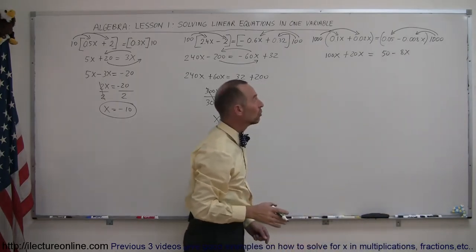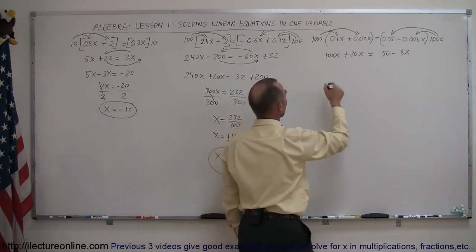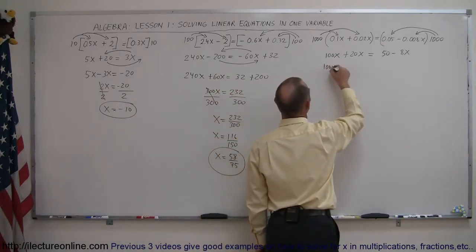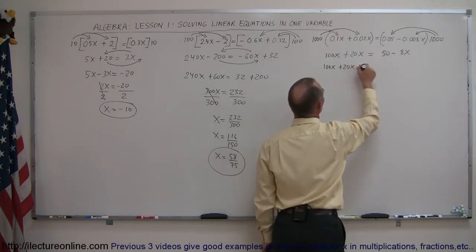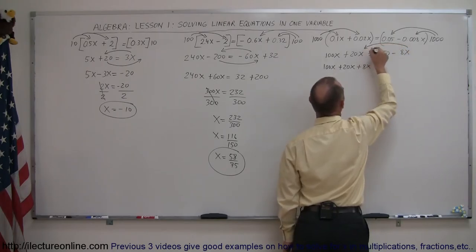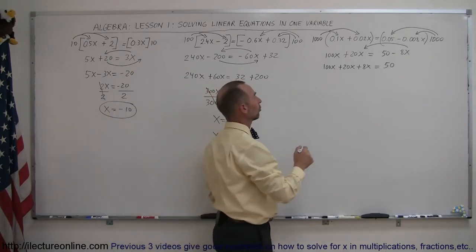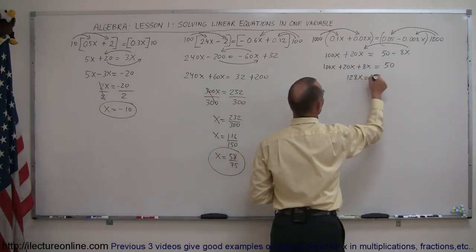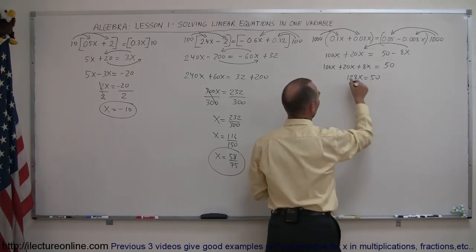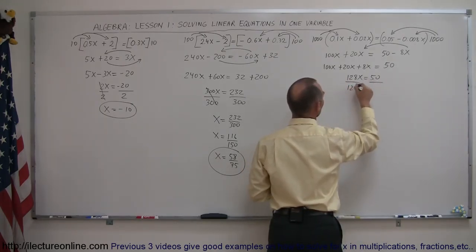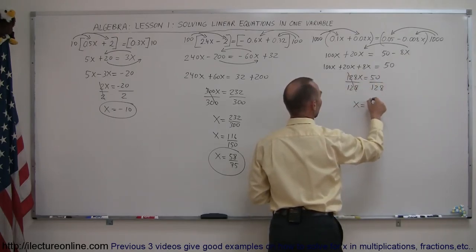1,000 times 0.1x becomes 100x, 1,000 times this becomes plus 20x equals 1,000 times this becomes 1,250, minus 1,000 times this becomes minus 8x. At this point, we're ready to move all the terms with the x to the left side, all the terms without the x to the right side. So here we get 100x plus 20x, and then we move the minus x over, that becomes a plus 8x. Notice this goes across equal sign, and the sign changes, the 50 stays on the right.